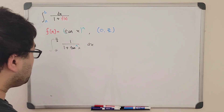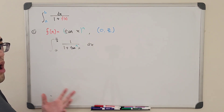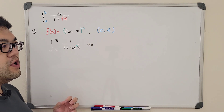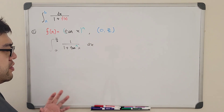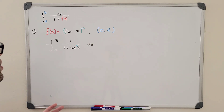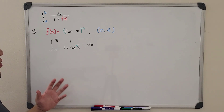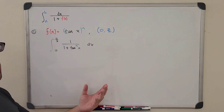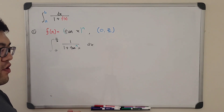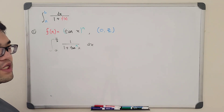This integral looks very difficult. If we try common methods like the DI method or substitution, they don't work nicely here — we'd end up with another integral that's very hard to evaluate, since it's not a basic or common antiderivative. This is why we're going to use the king's property.